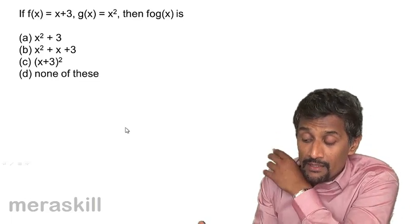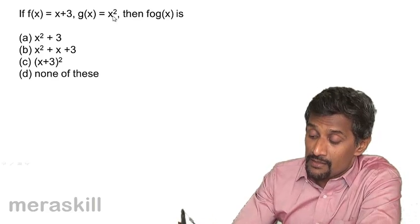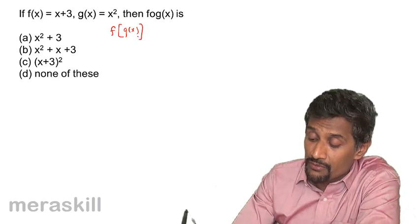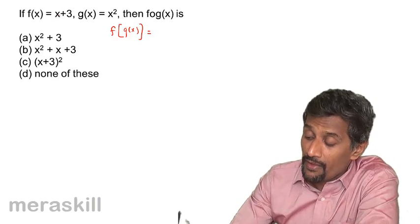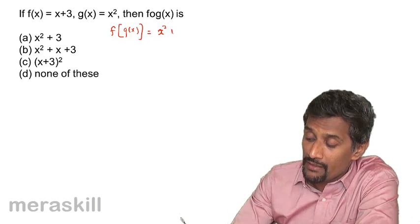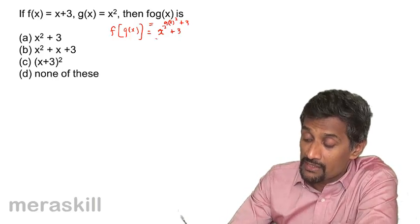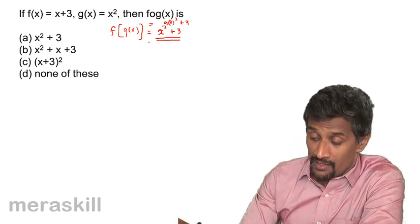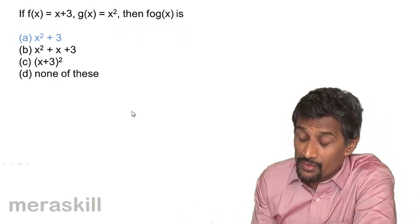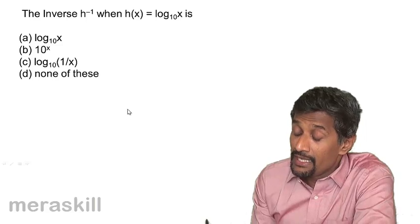Given f(x) = x + 3 and g(x) = x², find f(g(x)). f(g(x)) means writing g(x) in place of x in f: it becomes x² + 3. So f(g(x)) = x² + 3.